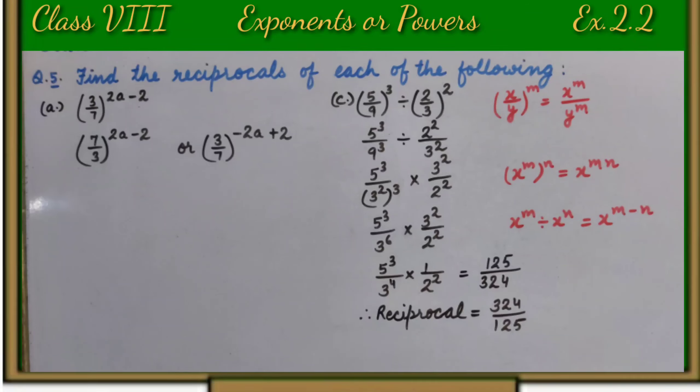So we get 5 raise to power 3 upon 9 raise to power 3 divided by 2 raise to power 2 upon 3 raise to power 2. 9 is a composite number, so we will prime factorize it. That is 3 square.